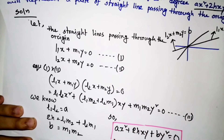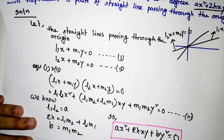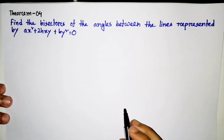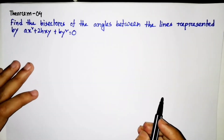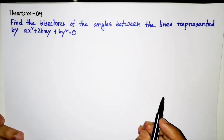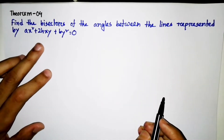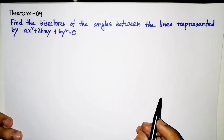This confirms the equation represents lines passing through the origin. Now let's see the next theorem: find the bisectors of the angle between the lines represented by ax² + 2hxy + by² = 0.